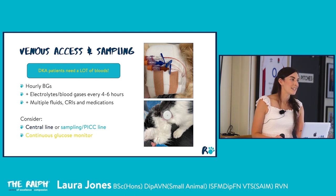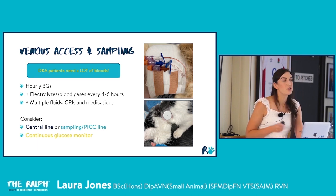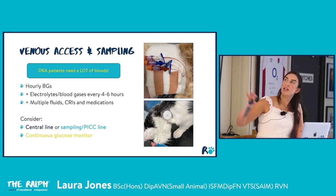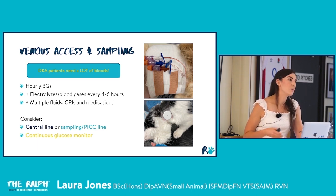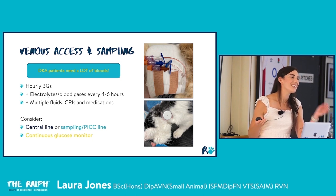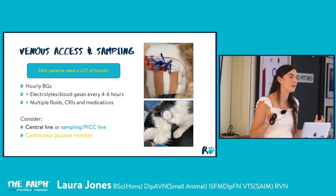Venous access and sampling are very important in DKA because these patients need frequent electrolytes, blood gases and blood glucose monitoring alongside multiple medications, IV fluids and CRIs. A central venous catheter or peripherally inserted central catheter (PICC) are excellent options, allowing both fluid and medication administration and blood sampling without repeated venipuncture — far more comfortable for these patients. Continuous glucose monitors can also be placed in hospital to measure glucose levels, but wait until dehydration is corrected as reduced interstitial fluid may affect sensor accuracy.